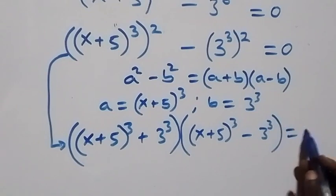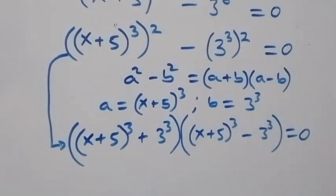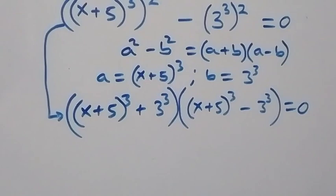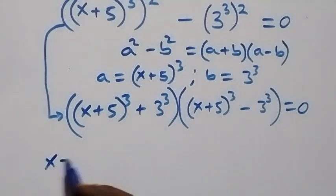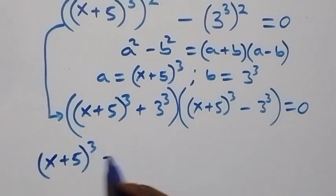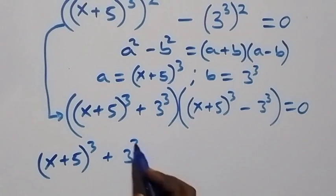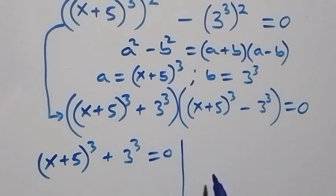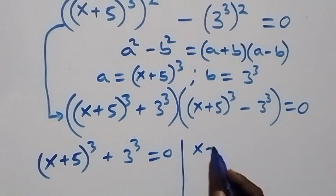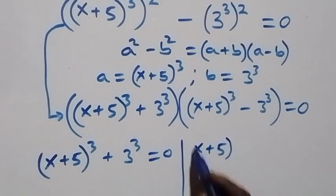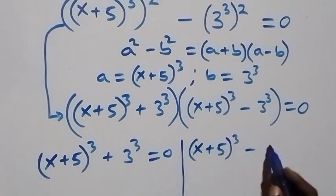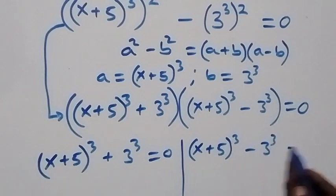This equals 0. From here we have two possible cases: the first one is x plus 5 all raised to power 3 plus 3 raised to power 3 equals 0, or x plus 5 all raised to power 3 minus 3 raised to power 3 equals 0.